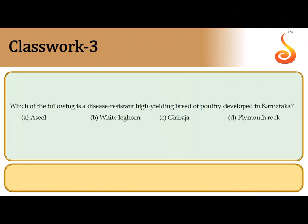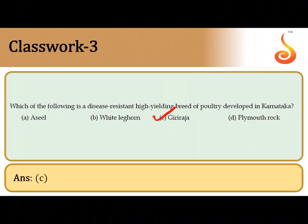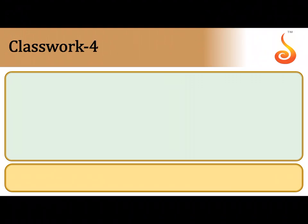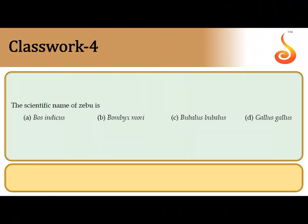The third question: which of the following is a disease-resistant high-yielding breed of cow developed in Karnataka? It was developed at the University of Agricultural Sciences in Hebbal, Bangalore — the answer is Giri Raja. So the correct answer is Giri Raja.